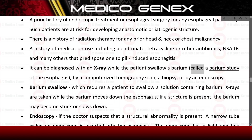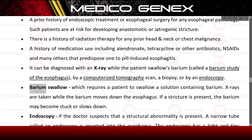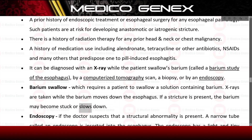Esophageal stricture can be diagnosed with a barium swallow study, CT scan, biopsy, or endoscopy. A barium swallow requires the patient to swallow a solution containing barium while X-rays are taken as it moves down the esophagus. If a stricture is present, the barium may become stuck or slow down.